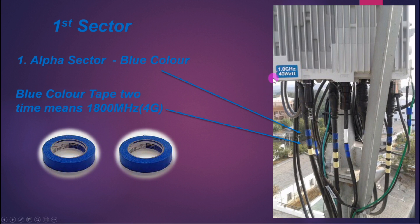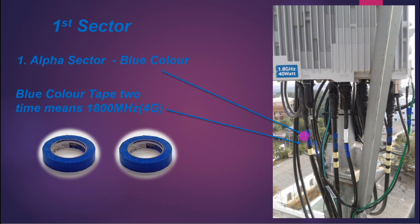We can see two-time blue tape confirming 1800 megahertz. We can also see yellow tape, which is generally used to identify port numbering. Port numbers one, two on the front side and three and four on the back side. This jumper connects to port one, this jumper to port two, the back-side jumper to port three, and the last one to port four. For Alpha sector you must use blue tape, and for 1800 MHz you mark two-time tape on the jumper and RET cable and all other cables.